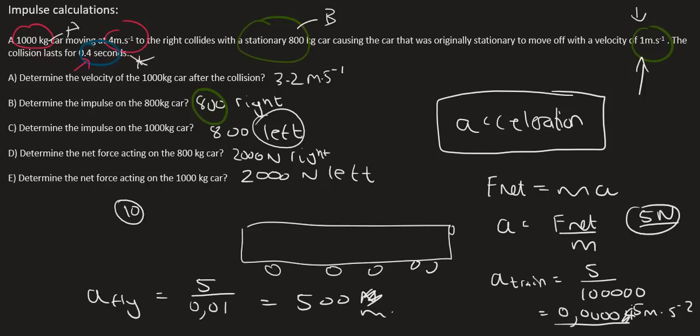That acceleration of 500 m/s² — the body cannot handle that, and so the fly is instantly killed. So if you have a massive truck hitting into a small car, the force exerted on both is the same. It's the mass: the smaller mass undergoes the greater acceleration, and that is what causes the greatest damage.